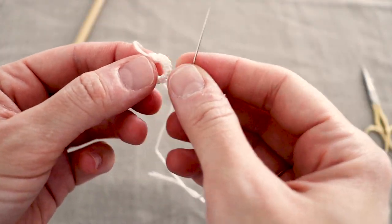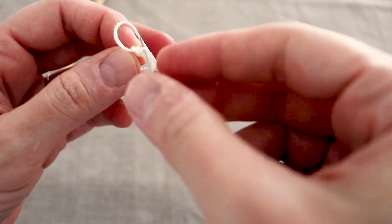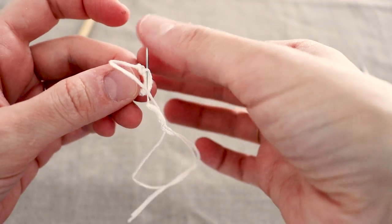When you reach the end, plunge the needle front to back through the outer hole created by the first buttonhole stitch you made to complete the ring.